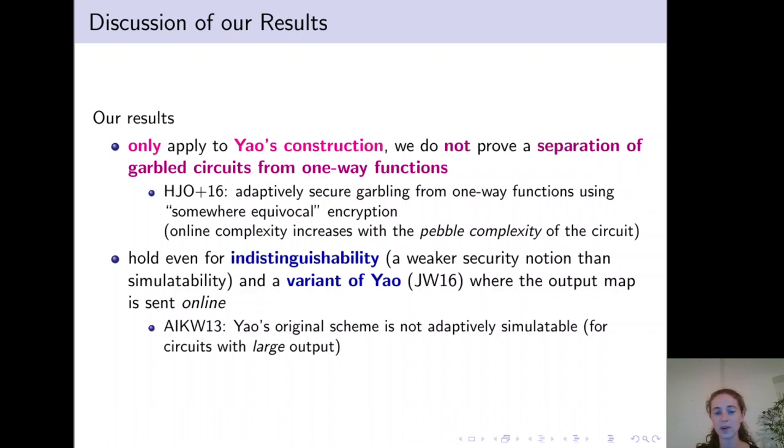So our result differs in three aspects. First, we consider indistinguishability instead of simulatability. Second, we consider the variant of Yao that was introduced by Jafargholi and Wichs, and for which they could prove an upper bound. And finally, we consider circuits of constant output.